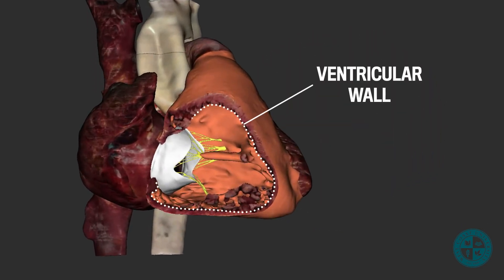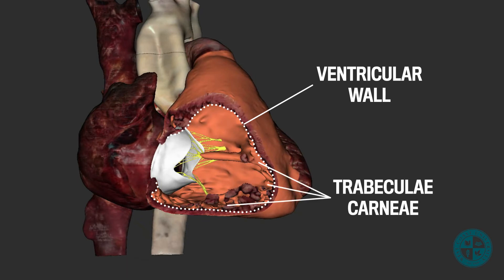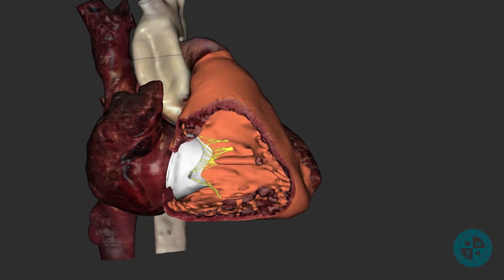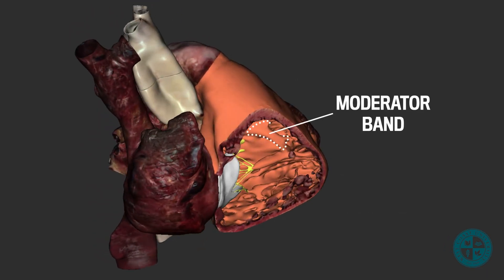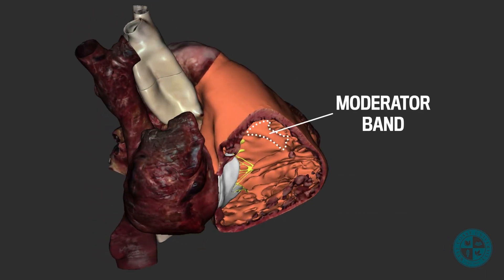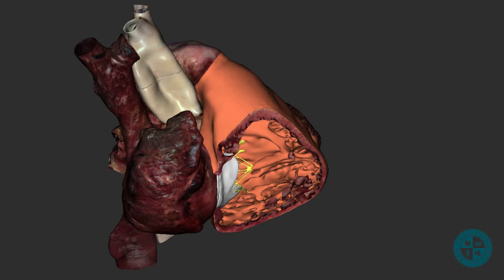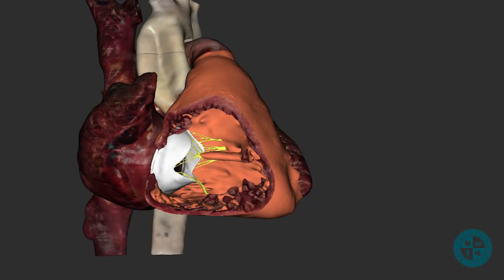If we look at the walls of the right ventricle, we can see irregular muscle ridges called trabeculae carneae. Additionally, we can find a muscular ridge that connects the inferior portion of the interventricular septum and the anterior papillary muscle. This structure is called the moderator band. The moderator band is an important structure for the electrical conduction system of the heart, to ensure the electrical events that trigger contraction are occurring quickly and efficiently.